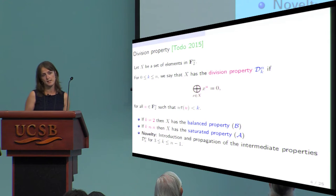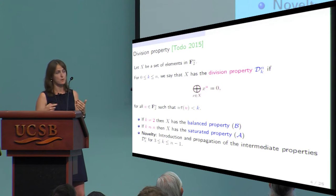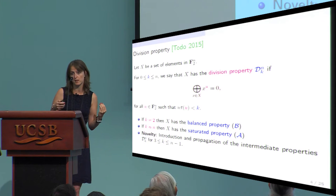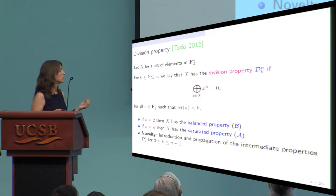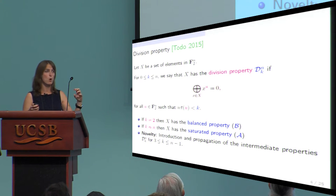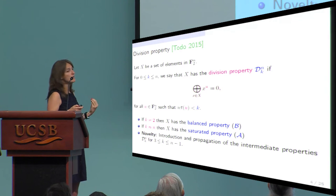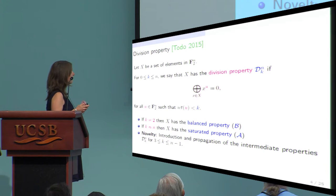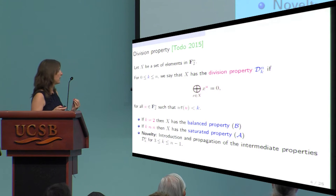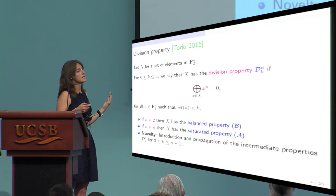What is the division property? If we have a set of elements in F_2^n, we say the set X has the division property of order k, denoted D_k, if the sum over all elements x in X of x^u equals 0 for all vectors u with Hamming weight strictly less than k.